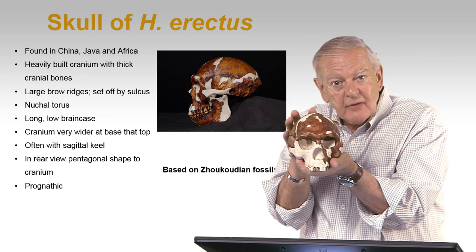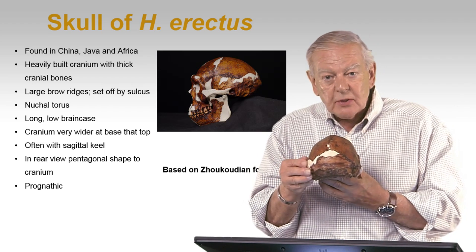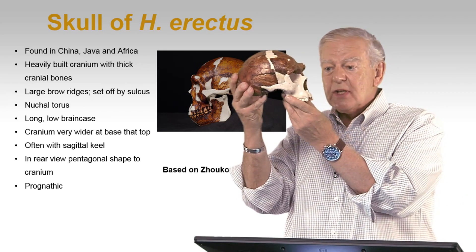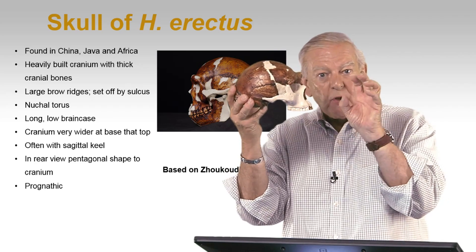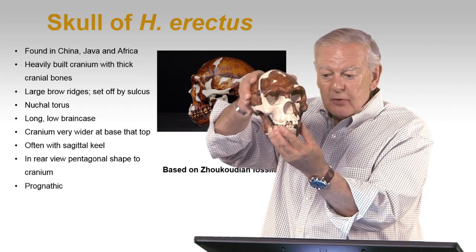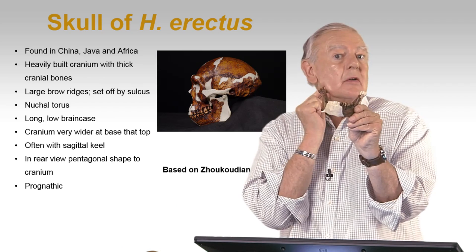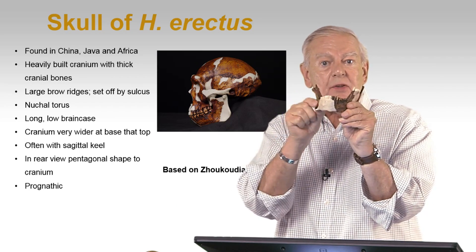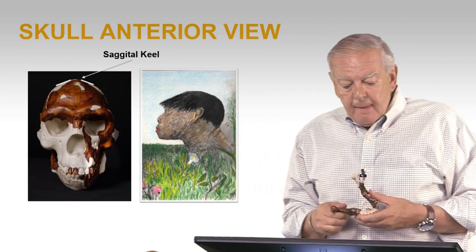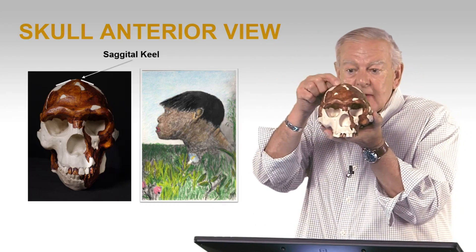That sagittal keel is characteristic of Asian erectus. In back view, it looks sort of pentagonal in shape — it has five sides to it. And in the face itself, looking at the face, it sticks out — it's prognathic, it's projecting. There are some features in the lower jaw also. Most interestingly, in these Asian forms, you can see how the mandible, the corner of the mandible, flares out to the side. If you look at it in anterior view, that sagittal keel is very clear.